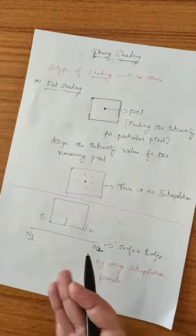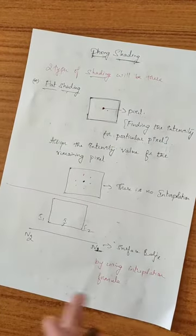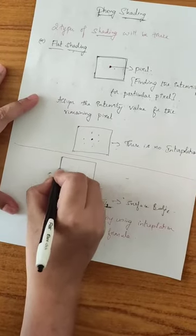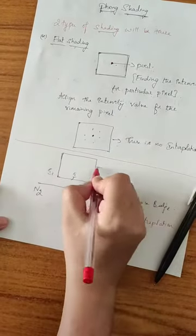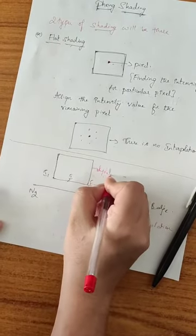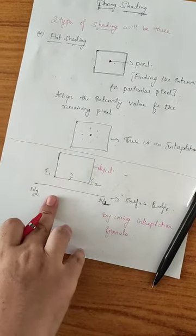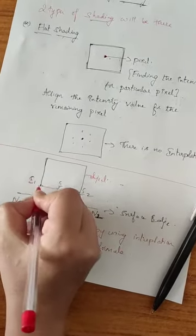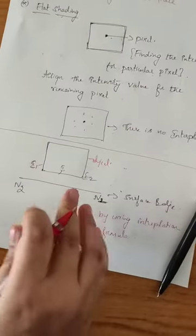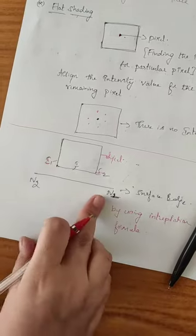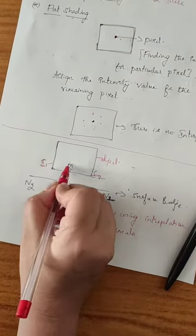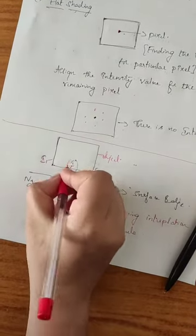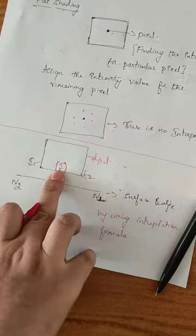In the case of Phong shading, this is an interpolation scheme of rendering. Consider an object — we need to find out the intensity for I1 and I2 on the edges. After finding the intensity for both I1 and I2, based on that intensity we trace the middle value, which is the Ith value.